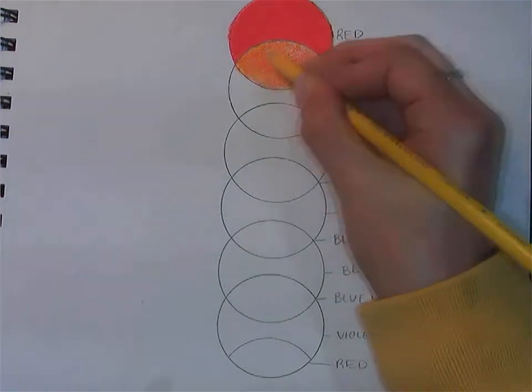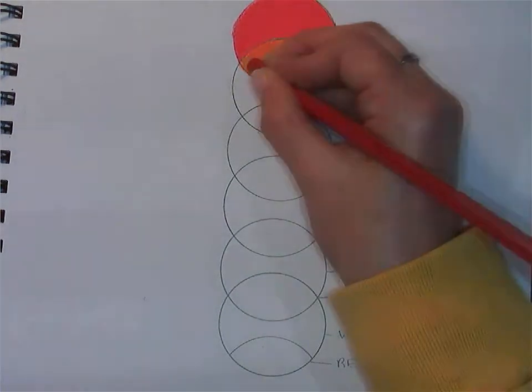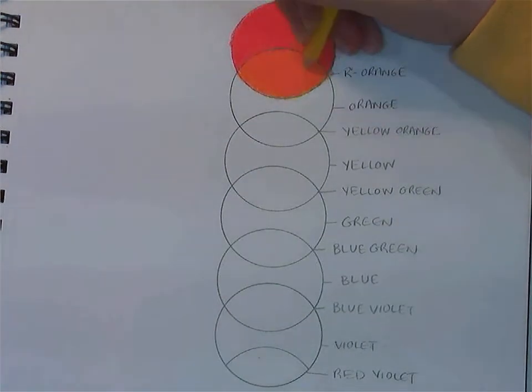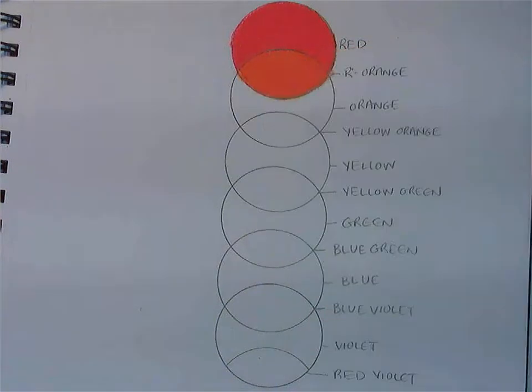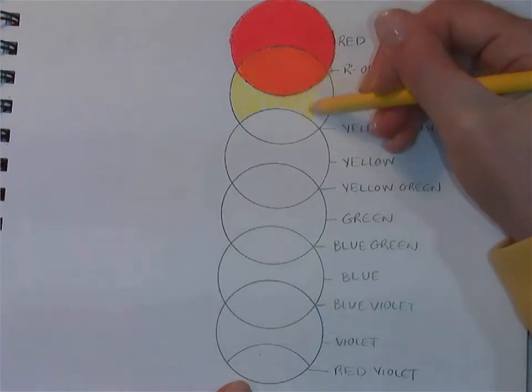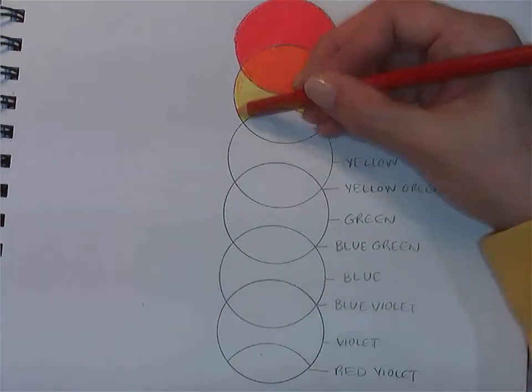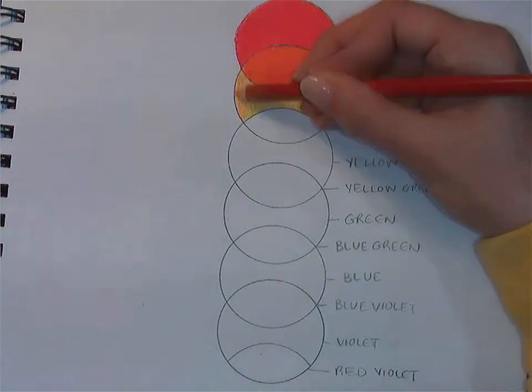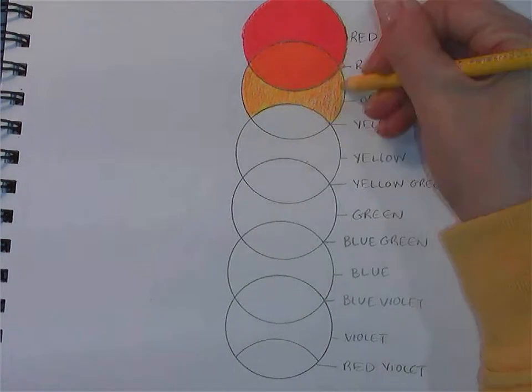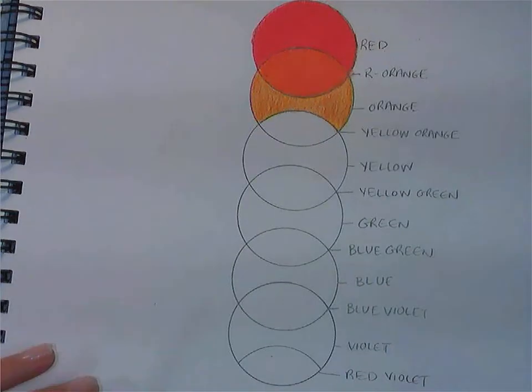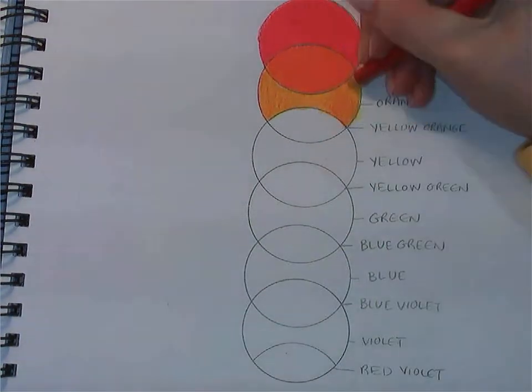With the red-orange, I always start with the weakest color first. Yellow is weaker than red, so I do a layer of that. Then I add in the red. I layer over and over until I get the desired color. And when I'm finished, I press and add some pressure onto the pencil to increase the intensity of it and to really make that color a solid color.